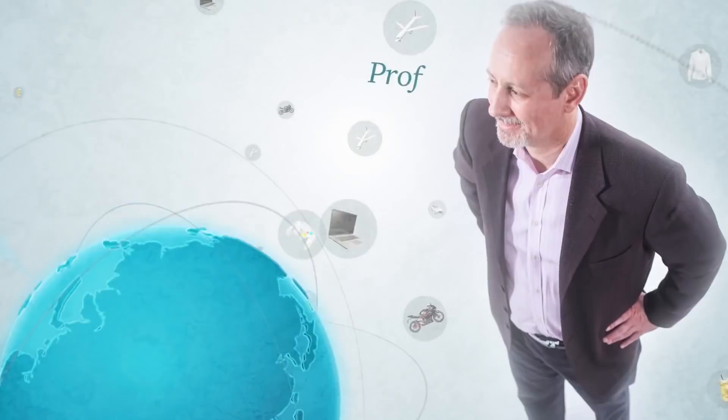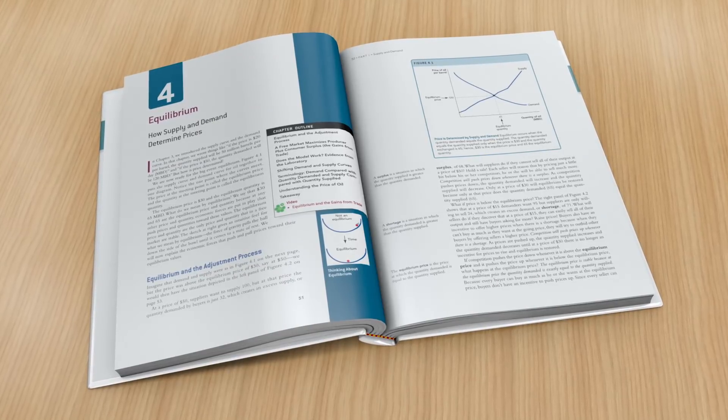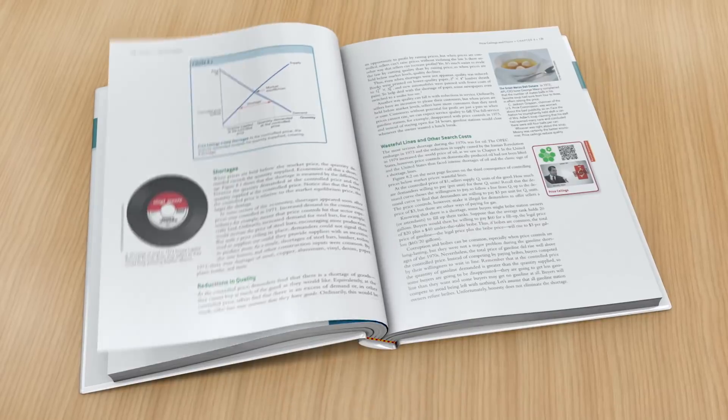Professors Tyler Cowen and Alex Tabarrok bring examples from economic history and countries around the world to make economics come alive for the contemporary student. And with its sharp focus on supply and demand, no other textbook teaches the economic way of thinking so memorably.